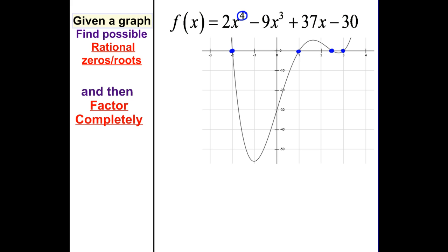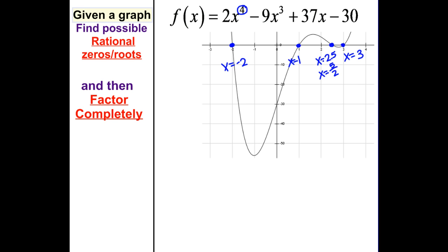We can tell what some of those are. I can tell that this is x equals negative 2. This next one over here is x equals 1. That third one is kind of harder to see. The fourth one we can tell is x equals 3. But that third one, I'm pretty sure that looks pretty close to x equals about 2.5, which is also the same as about 5 halves. We could factor this completely, or I could take my zeros and show you what my factors are. So we have f(x) — when x equals negative 2, all we do is add 2 to make it equal to 0: x plus 2 equals 0. So we know that our factor is x plus 2.